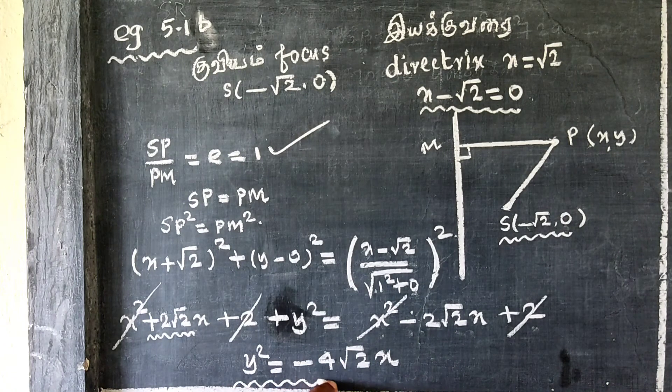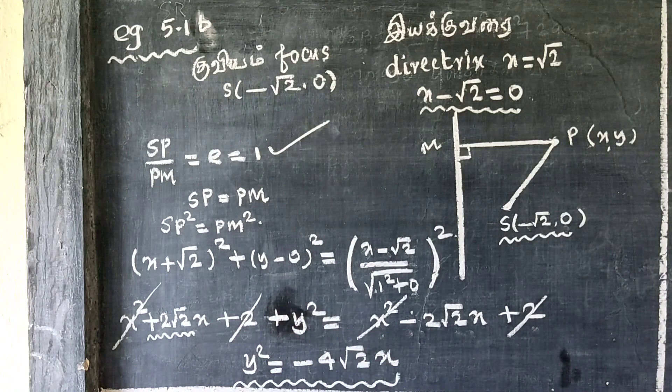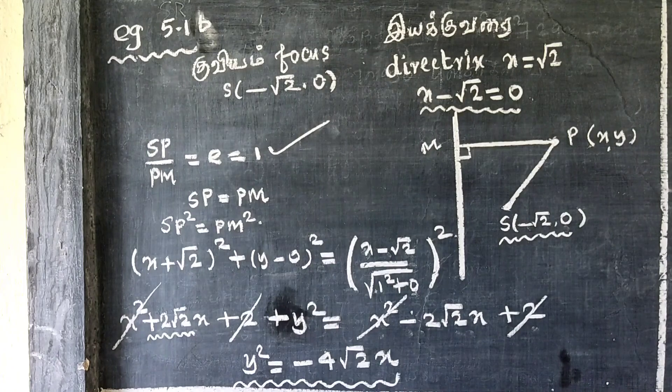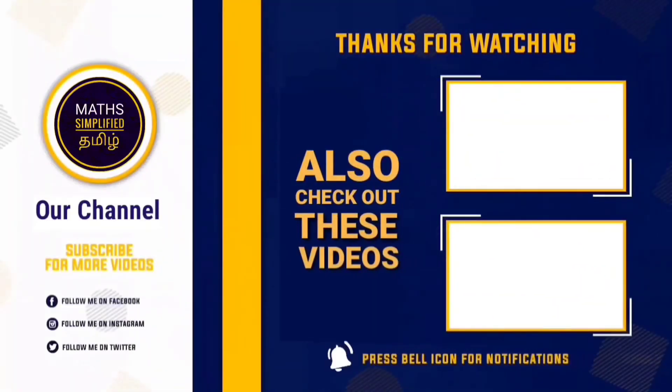Therefore, the equation of the parabola is y² = -4√2x.